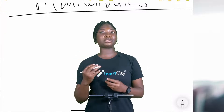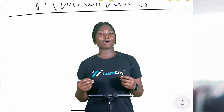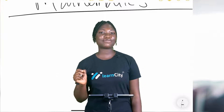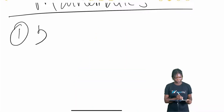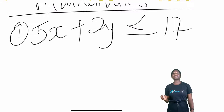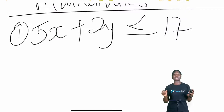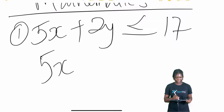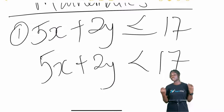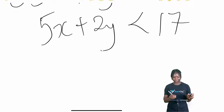Today we'll be solving two examples on solution sets of inequalities of two variables. Our first example is to determine the solution set of 5x plus 2y less than or equal to 17. One solution is x equals 2 and y equals 3.